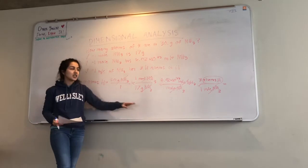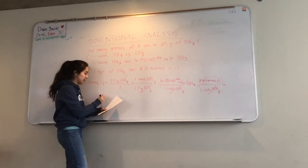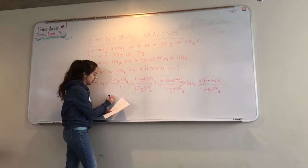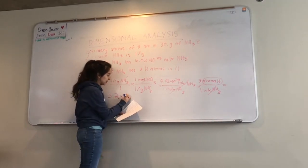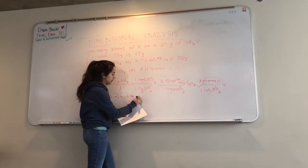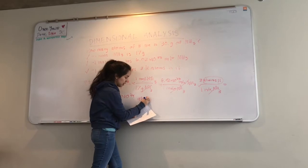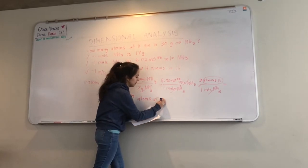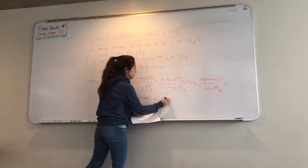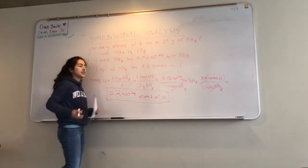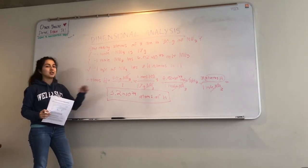Now, can someone plug this into a calculator and tell me what you get? Yes, that's correct. Our answer, using correct sig figs, is 3.2 times 10 to the 24. And always make sure to write down what your units are, atoms of hydrogen. And this is how you do dimensional analysis to convert measurements.